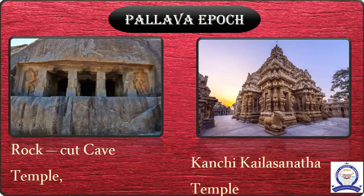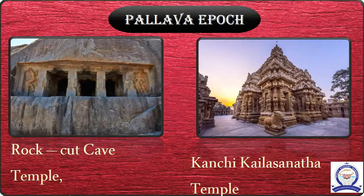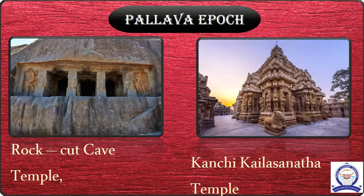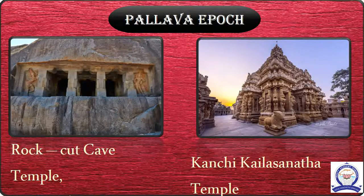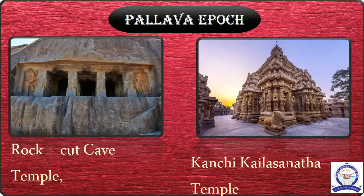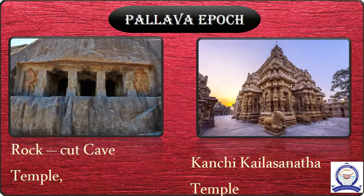Rock-cut temples were initially built by carving a rock to the required design and then rocks were cut to build them. The Pallava King Mahendra Varma was the pioneer in rock-cut architecture. All the cave temples have a simple sanctuary cut on the rear side of the wall with the frontage projecting mandapa. On the other side are two Dvarapalas.